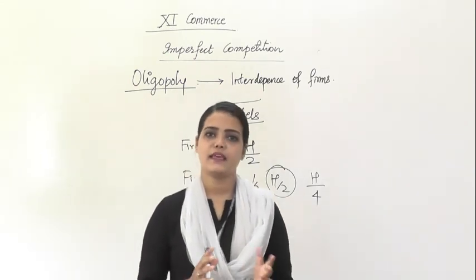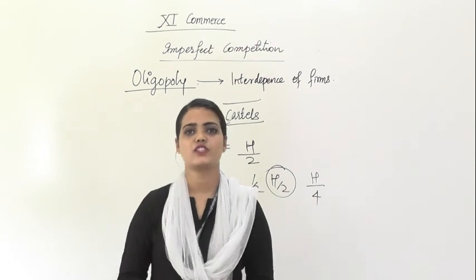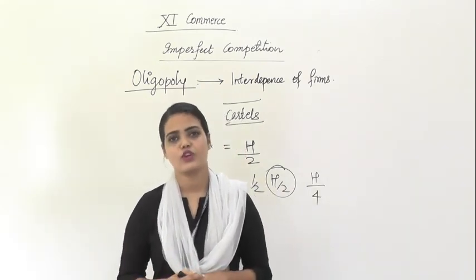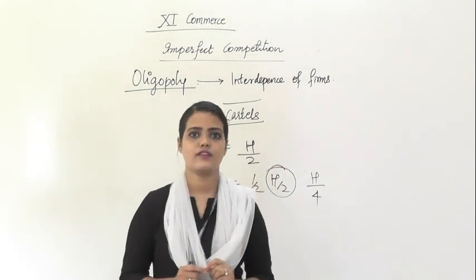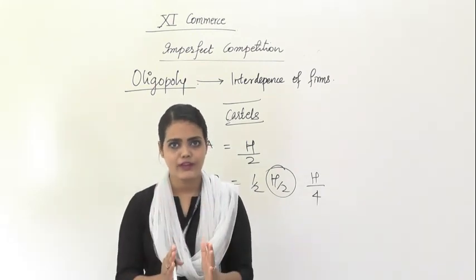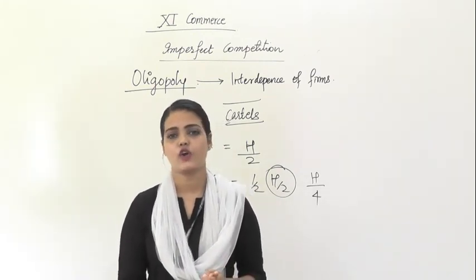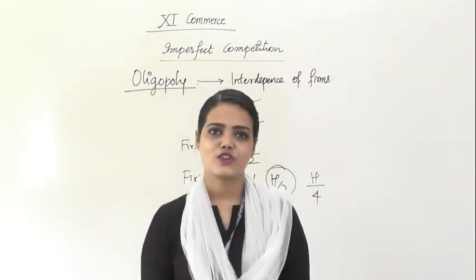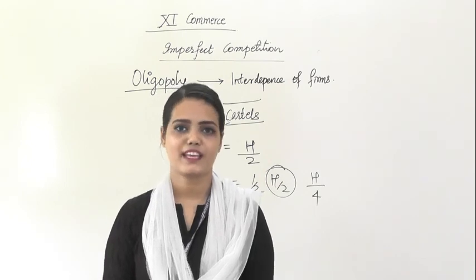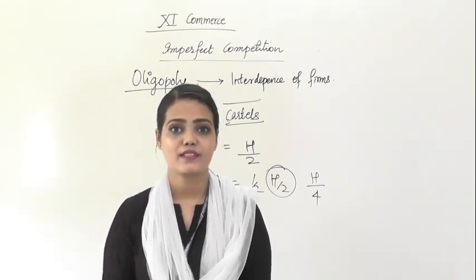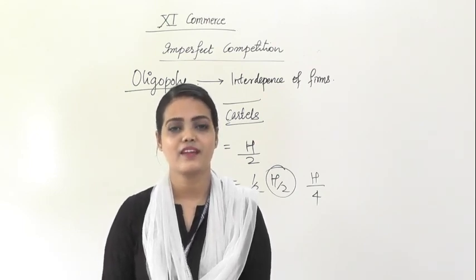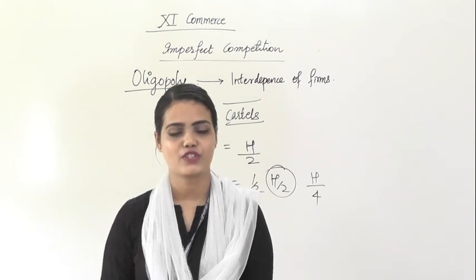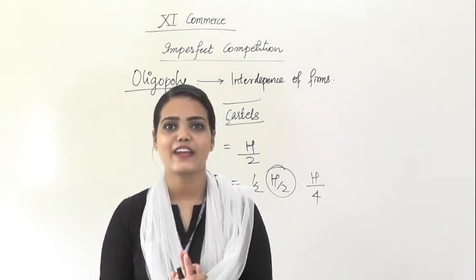To summarize oligopoly: it is a market with few sellers, ranging from 2 to 10. The most important feature is the huge level of interdependence — the pricing decision of one firm affects the entire oligopoly market. With this, we are done with imperfect competition and the theory of perfect competition. From next session onwards we will look at market equilibrium and what happens when supply and demand change. Revise properly and practice drawing the cost and revenue structure figures for every type of competition.